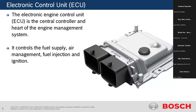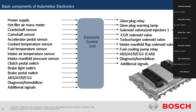The ECU controls vehicle components and vehicle performance by taking sensor data. But the question is: how does it control? It has data from the sensor, it processes all that data — now it has to control the fuel supply, air, injection, and ignition. To do all of this, it needs actuators. There are various types of actuators in a vehicle — glow plug relay, EGR solenoid valves, intake manifold flap solenoid, ABS, immobilizer — all are actuators.